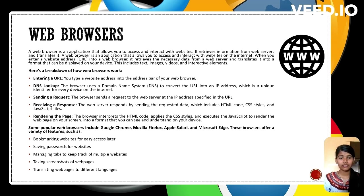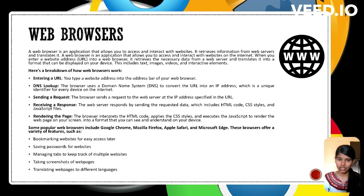Web browsers are applications that facilitate access to the internet, translating data from web servers into a viewable format on devices. They work by: entering a URL, initiating a request; performing a DNS lookup to translate the URL to an IP address; sending a request to the web server for data; receiving a response from the server; and rendering the page by displaying the content on your device. Popular browsers like Chrome, Firefox, and Edge offer features for bookmarking, password management, tab management, web screenshots, and language translation.